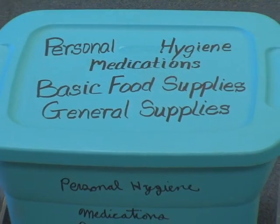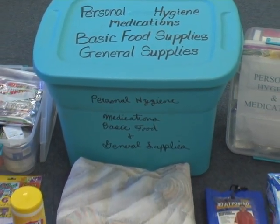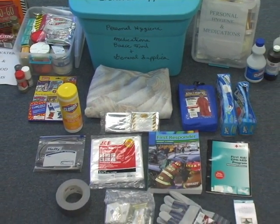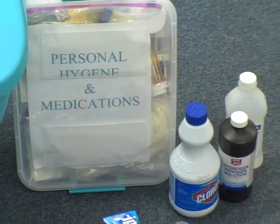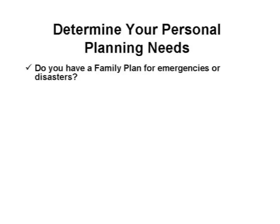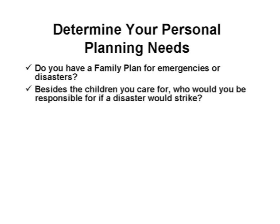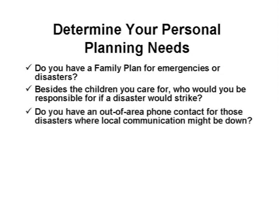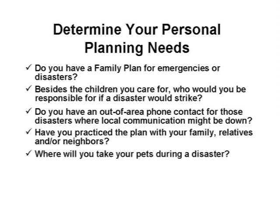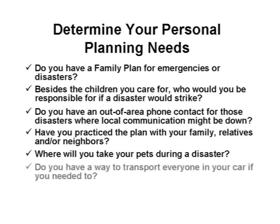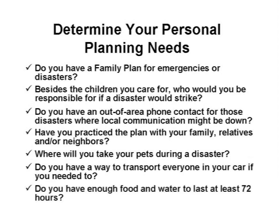Finally, it is important to remember that before you can care for others in an emergency or disaster, you need to make sure you and your staff are prepared at home. All staff should be strongly encouraged to have their own family plan. Here are some things to consider: Do you have a family plan for emergencies or disasters? Besides the children you care for, who would you be responsible for if a disaster would strike? Do you have an out-of-area phone contact for those disasters where local communication might be down? Have you practiced the plan with your family, relatives, and/or neighbors? Where will you take your pets during a disaster? Do you have a way to transport everyone in your car if you needed to? Do you have enough food and water to last at least 72 hours?